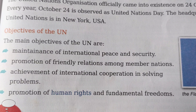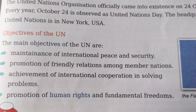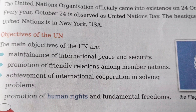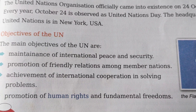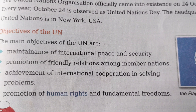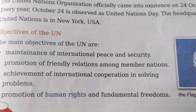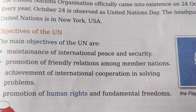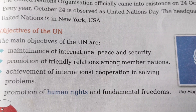The third objective is achievement of international cooperation in solving problems — any problems among UN members will be solved through friendly relations and other activities. The fourth is promotion of human rights and fundamental freedoms. The UN assures that human rights and fundamental freedoms — such as freedom of speech, education, and others — are maintained among all member countries and across the world.